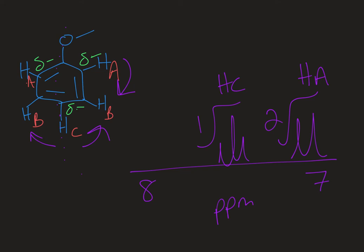HB does not have as much electron density localized on that carbon. Those protons aren't going to be as shielded. HB has an HA on one side and an HC on the other side, so that's going to be a triplet. There are two HBs and that's going to show up the furthest downfield within this range. So given this molecule we would expect to see three unique signals because we have three unique protons, and where they show up relative to one another depends on their location relative to the substituent on the ring.